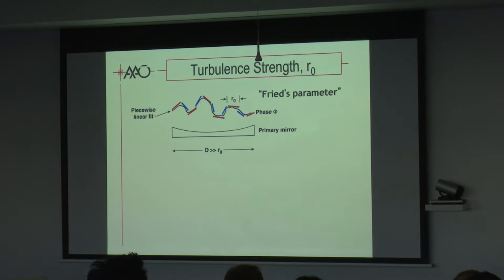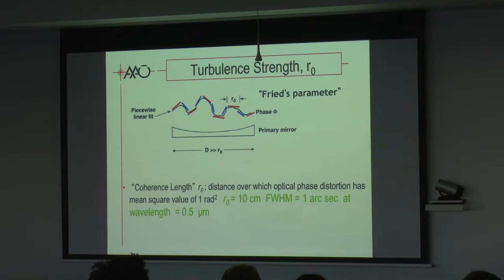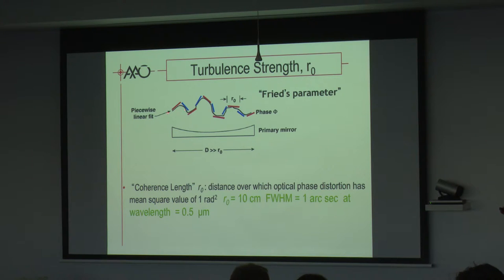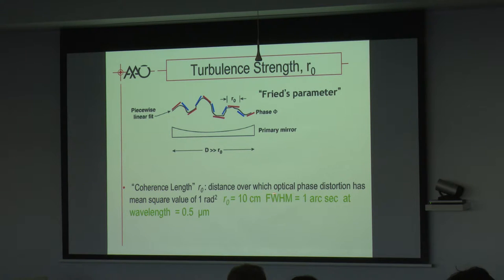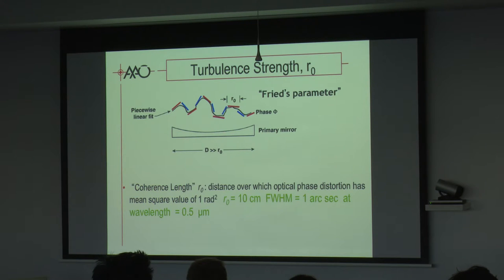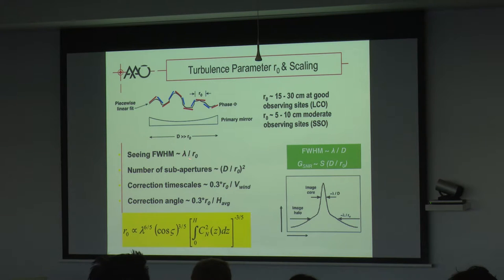An important parameter in adaptive optics is r0, the Fried parameter — basically the coherent length, the distance over which the wavefront is considered diffraction-limited. It's the size of an aperture where you will get a diffraction-limited image. At good sites r0 is about 10 cm in the V-band, corresponding to about one arcsecond seeing. We need adaptive optics because the primary mirror is a lot larger than r0. Using r0 we can determine the seeing, the full-width half-maximum, and approximately the number of sub-apertures needed in the AO system — given by D over r0.